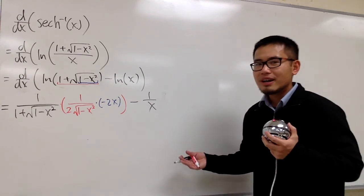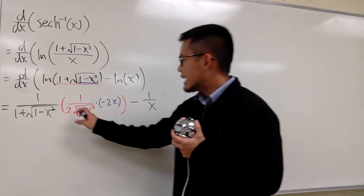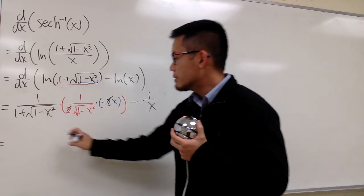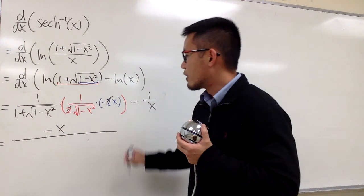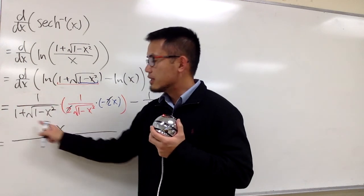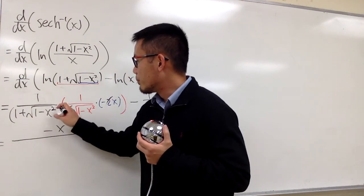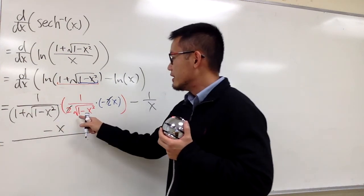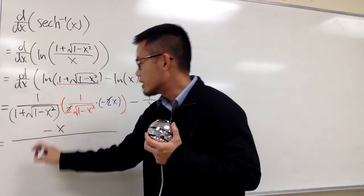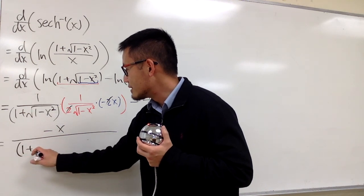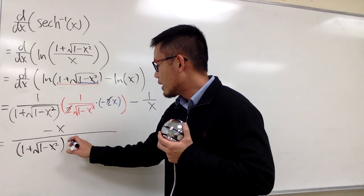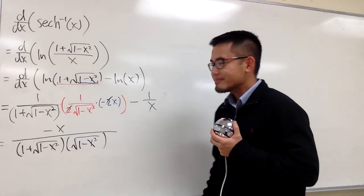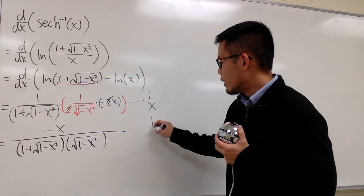This is something we can simplify. We see that the 2 and 2 cancel, so for the first term we will have 1 times negative x on the top — so negative x — and this is over this times that. Be sure that you see this is the first term; technically here we have invisible parentheses. So we have this as the first denominator and this as the second denominator — they're multiplying. We have 1 plus square root of 1 minus x squared times the other one, which is the square root of 1 minus x squared. And then for the second term we just have minus 1 over x.